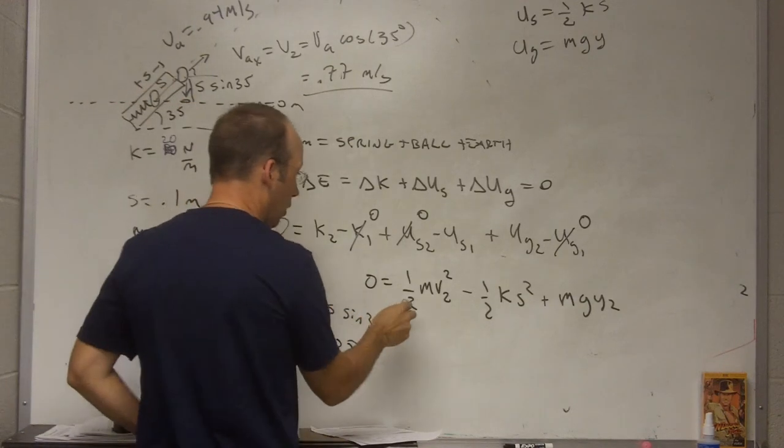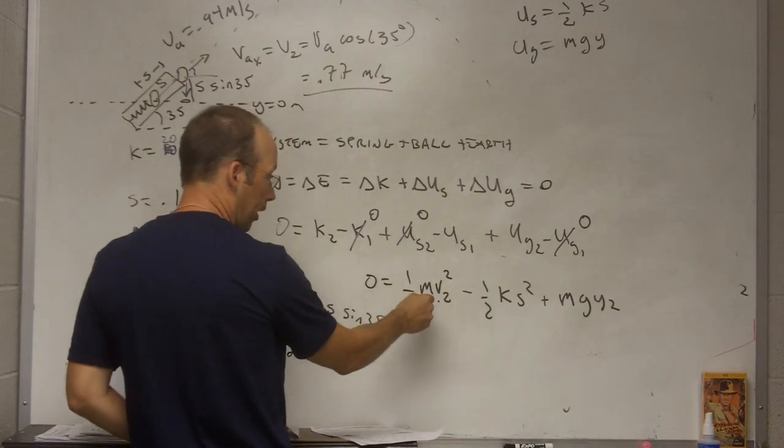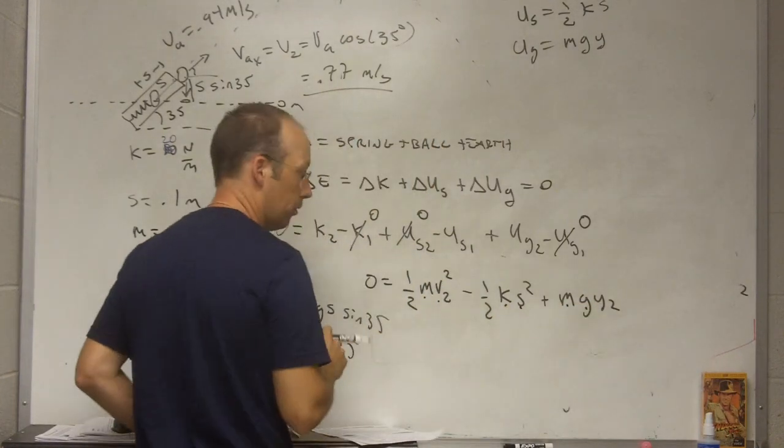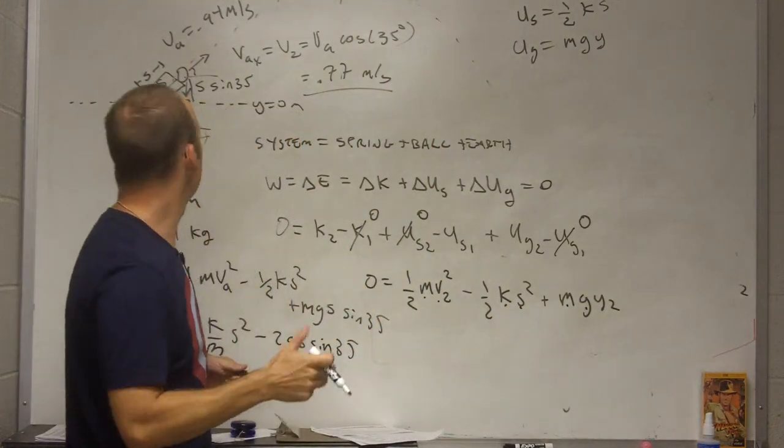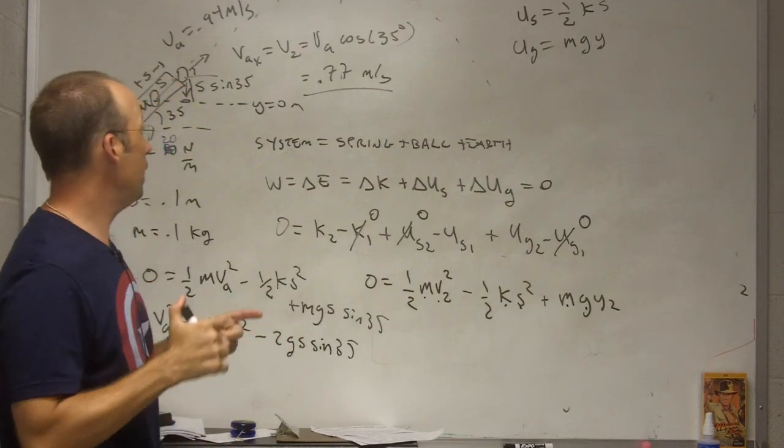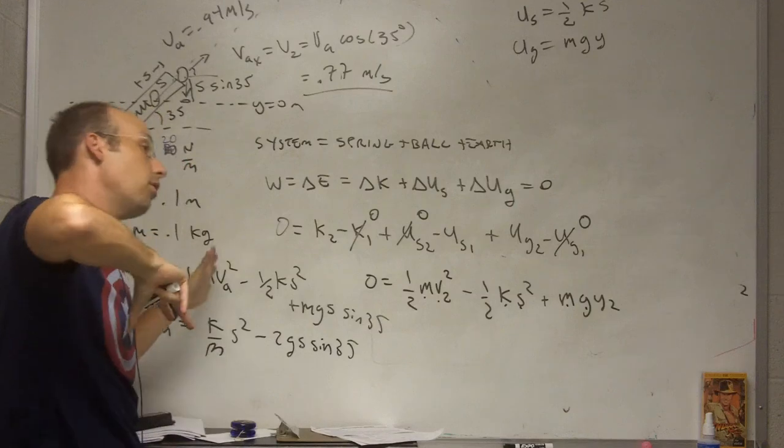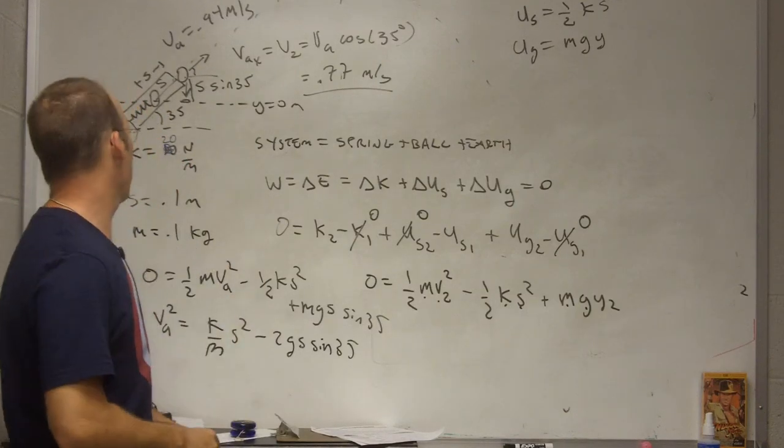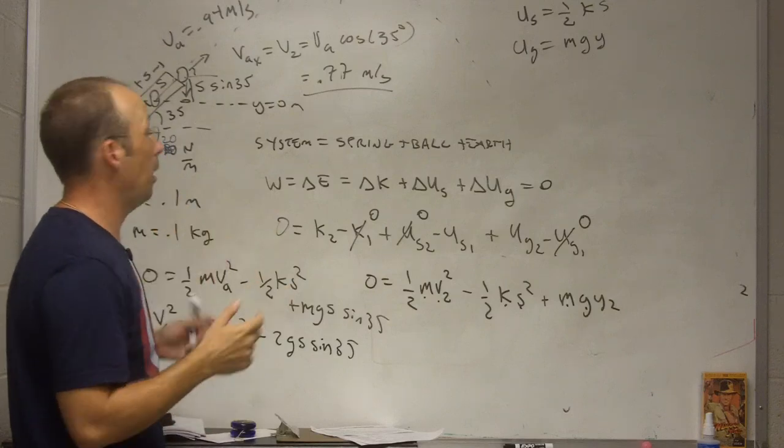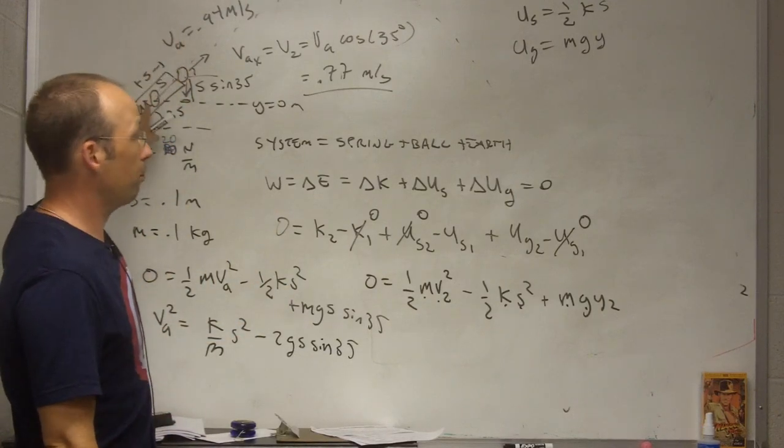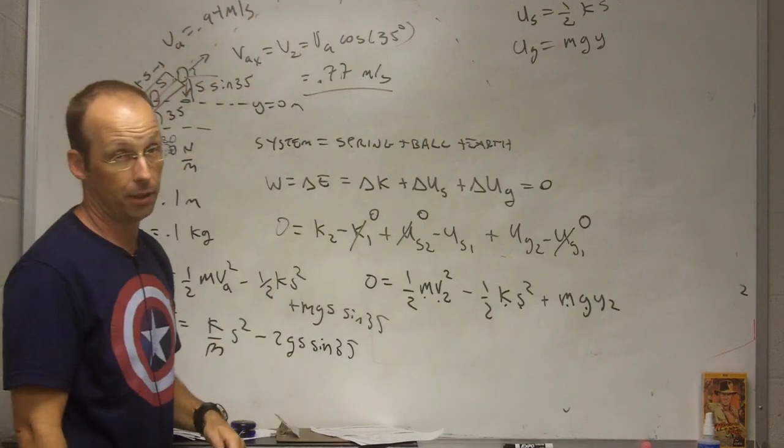And, then, going back down here, now, I know V2. I know M. I know K. I know S. I know M. I know G. I can solve for Y2. And, I'll let you do that. Okay. So, it looks like a complicated problem. But, the key thing here is, I can still use ideas from projectile motion. And, I can use those with my work energy principle to find things for a more complicated case. I do like this problem because it involves a spring, spring potential energy and gravitational potential energy.